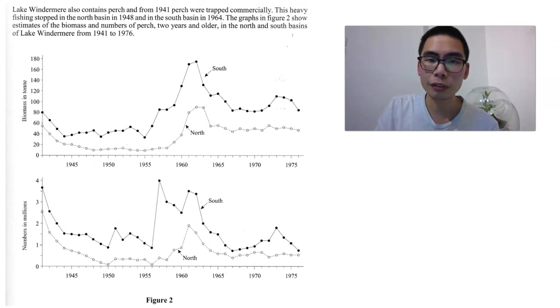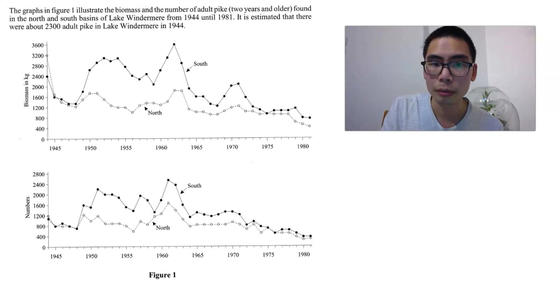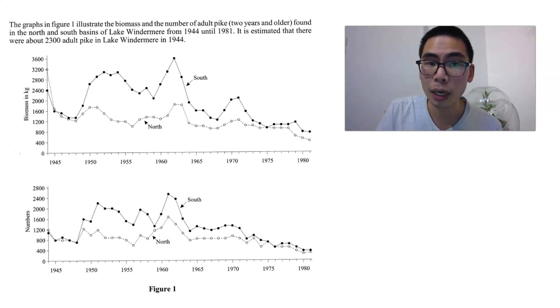So here, figure 2 is showing us the numbers and the biomass of perch in the North and the South Basin over time. And in figure 1, this is showing us the biomass and the numbers of pike over time in the North and the South Basin.